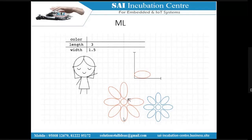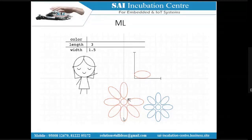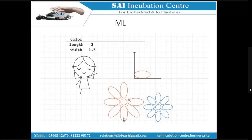There is one girl who has been assigned homework from her school. She has to classify between red and blue color flowers. She plucks each and every petal, measures the length and width, identifies the color, and plots the data in a small table.